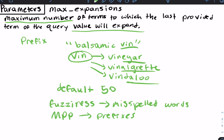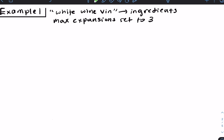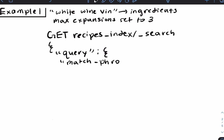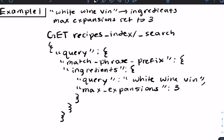Now let's take a look at an example. Let's say we were looking for 'white wine vin' within the ingredients field and we wanted to set max expansions to 3. You can pause this video and write out the query on your own. We're searching within the ingredients field for 'white wine vin' and we've set our max expansions to 3, so we can only expand to at most three different possible terms.